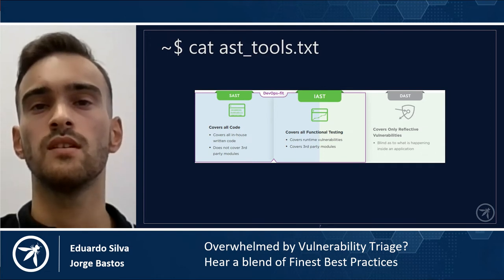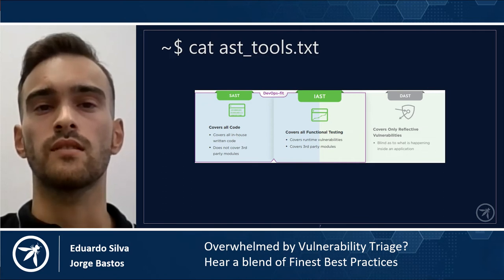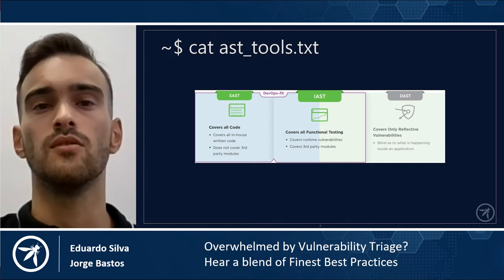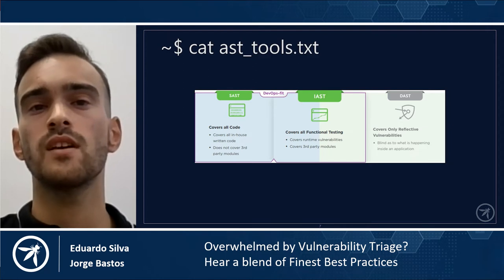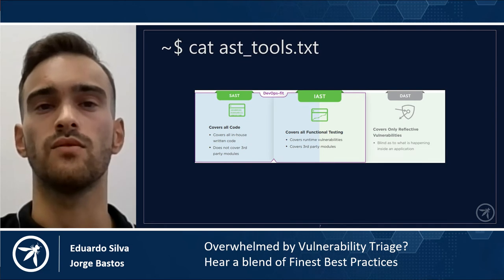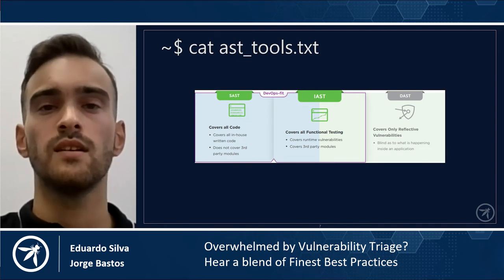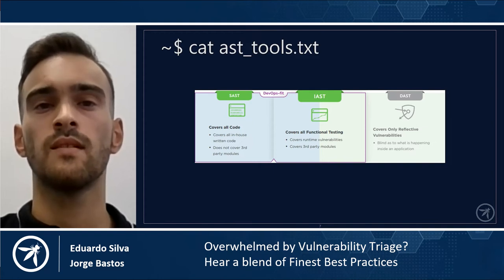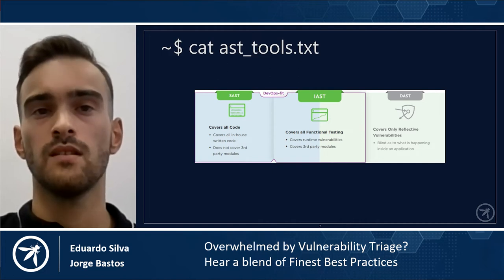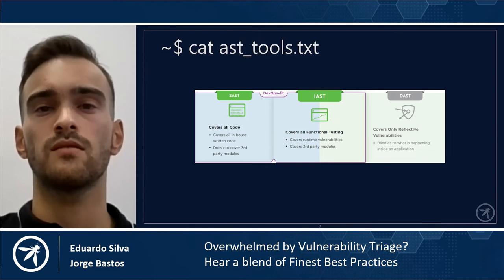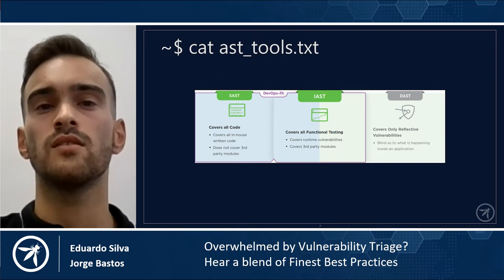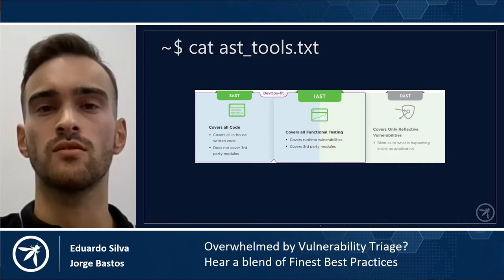A limitation of DAST is that it cannot detect non-reflective attacks — attacks that do not return a response. In summary, DAST does not suggest where to fix the problem, only says that a problem exists. Regarding IAST, it does not require applications to be attacked to find vulnerabilities. By just browsing the application, IAST leverages its visibility of source code and execution flow inside the app to detect security risks in real time. It can also detect non-reflective responses and be used as a complement to DAST. Third-party code is reviewed as part of the process. About SAST — on one hand it scans all the application code developed by the programmers, but on the other hand it is not able to scan third-party code because their code is only available at runtime.